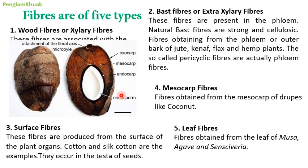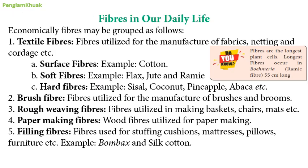In coconut, the exocarp is the outer layer, the mesocarp is the middle fibrous layer, and the endocarp covers the endosperm (the coconut flesh). Fibers obtained from the mesocarp are called mesocarp fibers. Number five is leaf fiber — fiber obtained from the leaves of Musa (banana), Agave, and Sanseviera; these are called leaf fibers.